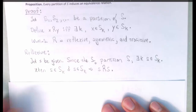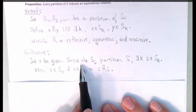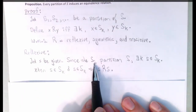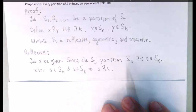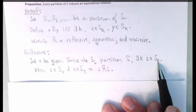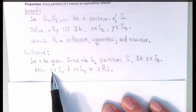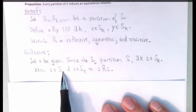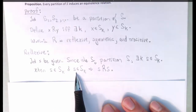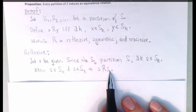For reflexive, let s be an element in the big set S. Since the S_i partition S, there has to be some subset K that contains little s. Little s is in S_K, and little s is in S_K tells us that s is related to itself.